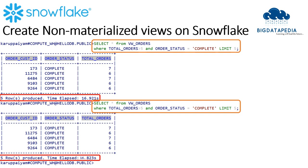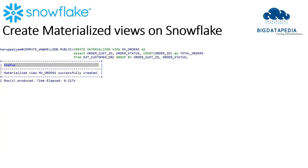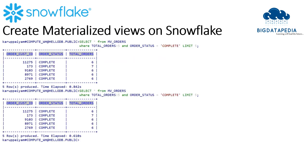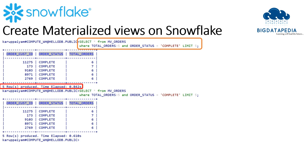Now we can create a materialized view and see. I am going to create a materialized view on the same select statement. Here is the command and syntax: create materialized view, view name, as, select statement. Once I execute that, you can see the view will be created. Now I am going to select some records from that view with the same filter conditions as the previous non-materialized view. Here you can see that the outcome is at 0.8 seconds. Again I am going to run the query and it will be even faster.